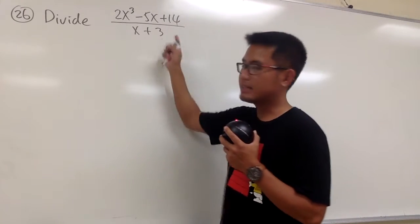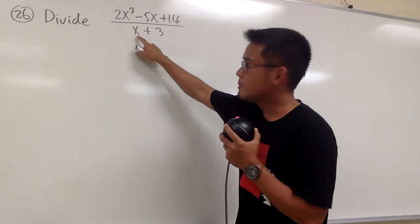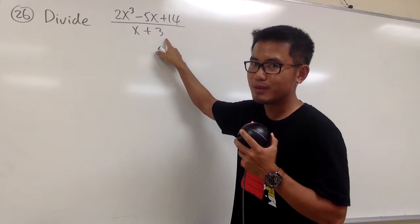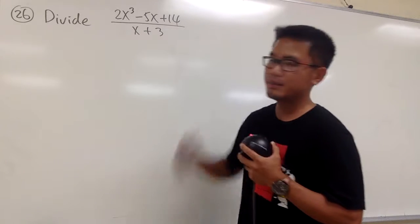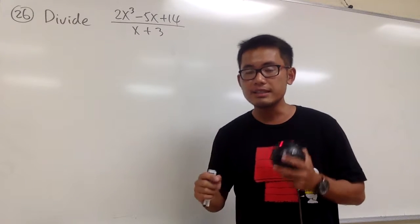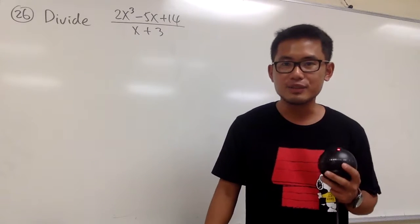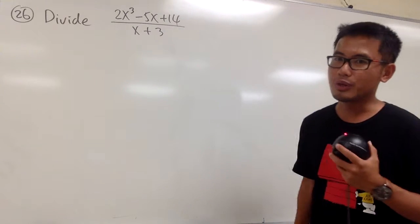Okay, for number 26, we are going to divide this out. You see that on the bottom, in fact, we have two terms, right? x and the 3, two terms. So in this case, we have to use the long division or the synthetic division. But let me demonstrate the long division right here.